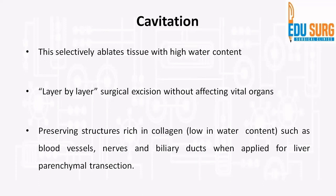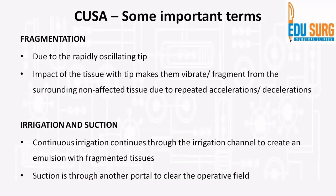CUSA is used in liver surgery because hepatocytes are surrounded by structures such as blood vessels, nerves, and biliary ducts, which are high in collagen and elastin and low in water content, and therefore these structures are not damaged by CUSA. So it is routinely used in liver parenchymal transection. Other important terms include fragmentation, which occurs due to the rapidly oscillating tip as a mechanical effect — the impact of the tip with the tissue makes them vibrate and fragment, and the fragmented tissue is then suctioned and aspirated. There is continuous irrigation through the CUSA probe via the irrigation channel, which creates an emulsion with the fragmented tissue, and suction through another portal to clear the operative field.